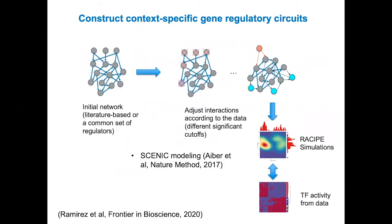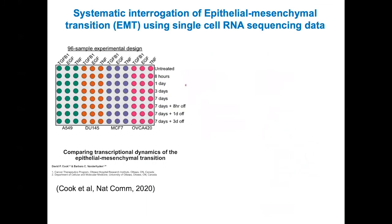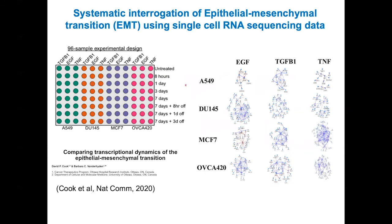Then, how about network construction? Here, we developed an approach that integrates bioinformatics with mathematical modeling. We generated a series of gene networks using the popular tool CNEC with different cutoffs or significance levels, and then used RECIPE to identify the optimal networks. We applied the methods to a recent collection of time-series single-cell sequencing data for studying epithelial-mesenchymal transitions in four cancer cell lines with three different signal inputs. For each, we can construct a context-specific gene network. Interestingly, they are not very small or large networks, but of intermediate size.